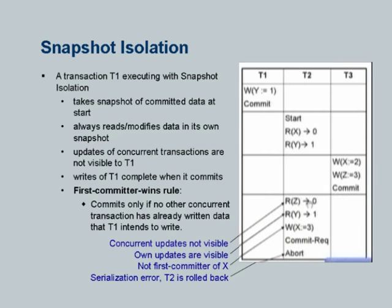What the designers of snapshot isolation did is they said: locking is not enough because it will result in lost updates. Let us do something slightly different — let us see at this point if any other concurrent transaction wrote X. If a concurrent transaction wrote X and has committed, then I cannot commit, I will have to roll back. What are the concurrent transactions? Is T1 concurrent? No, T1 had completed before T2 started. Is T3 concurrent? Yes, because T3 ran while T2 was running.